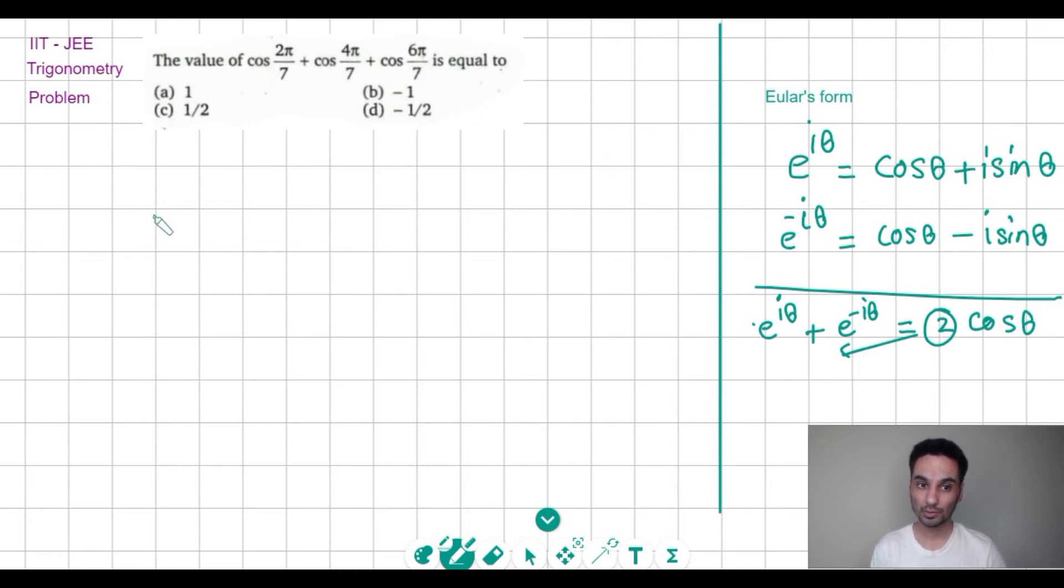So by this, if I write my given expression, the given expression first is cos 2π/7 + cos 4π/7 + cos 6π/7.